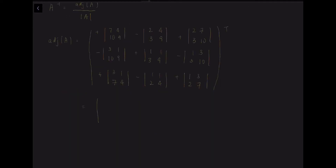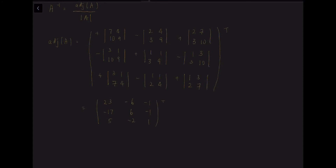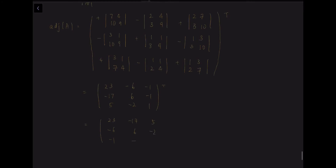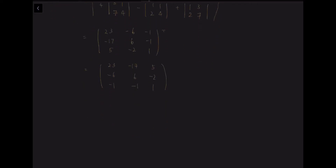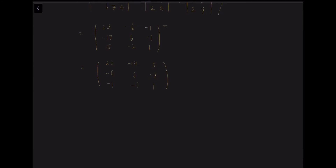Next, we simplify each cofactor into a single value. Once we are done, we transpose this matrix. Transpose means swapping the values diagonally. As you can see, we swap negative 17 and negative 6, we swap 5 and negative 1, and we swap negative 2 and negative 1. We obtain the transposed matrix, and this whole matrix is now the adjoint A.